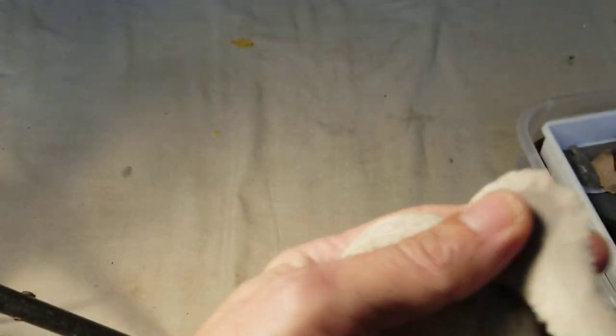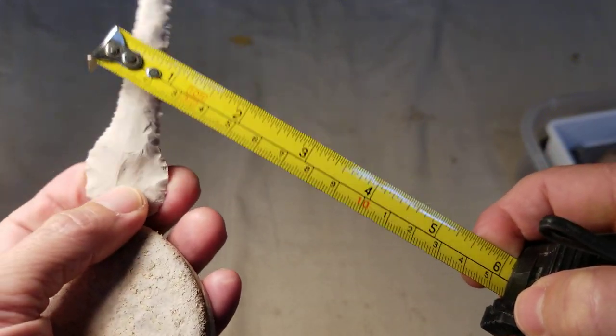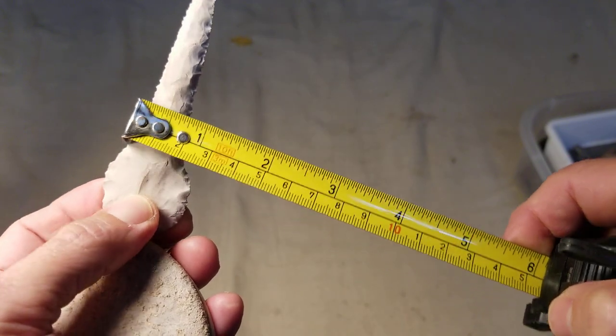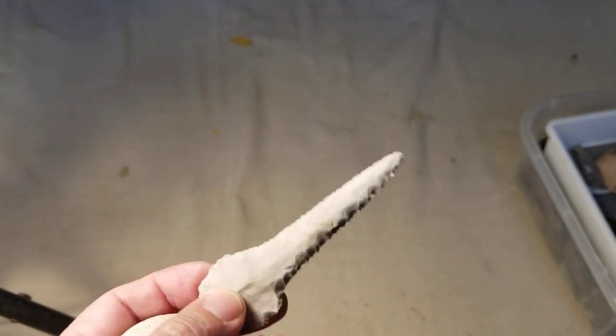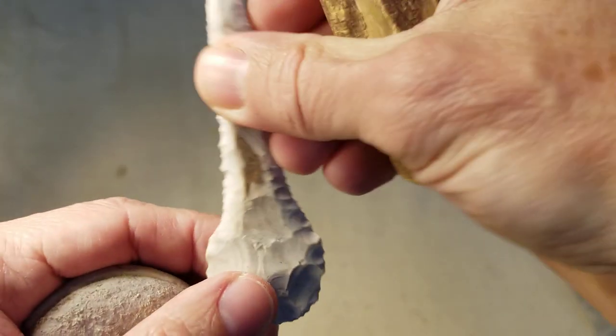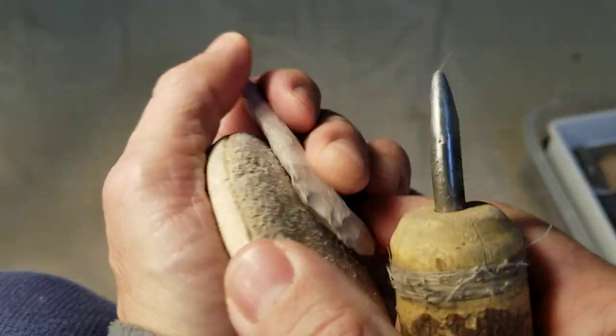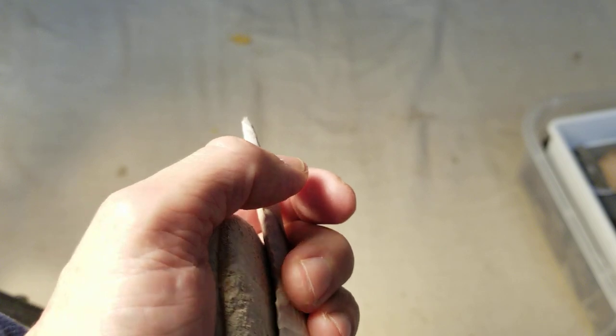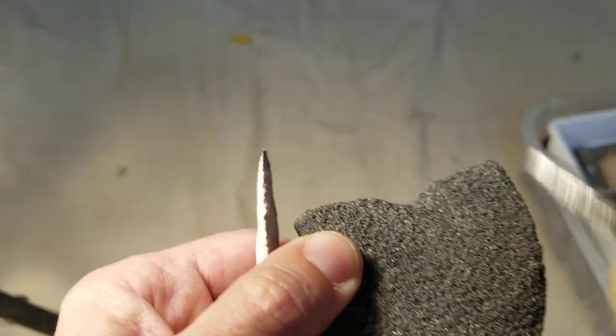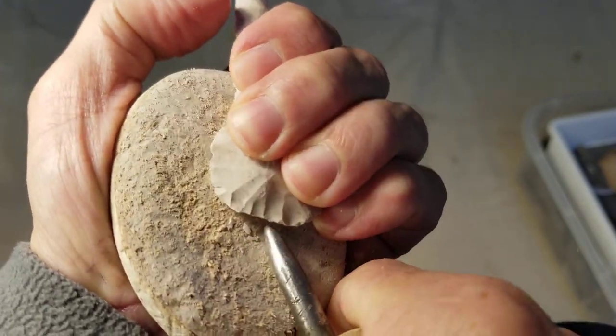Right now it's three and seven eighths at the base. It's like five eighths at that point. I'm gonna make it more narrow and I think I'm gonna work on the stem here a little bit also. Just pressure flake. I'm just going to do it quickly, just another short video on this drill.